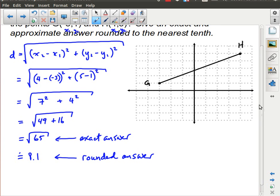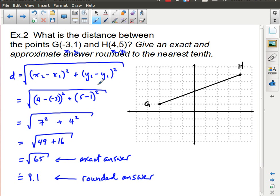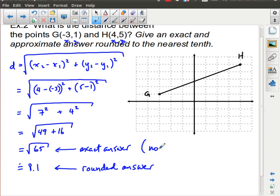So when the question asked for an exact and approximate answer, when we want an exact answer, that means no rounding. So we don't want any rounding, and usually we want no decimals. So if you've got a fraction, leave it as a fraction. That's what an exact answer means. And then an approximate answer means that you will round it, and if it tells you where to round it to, great, otherwise use your best judgment.